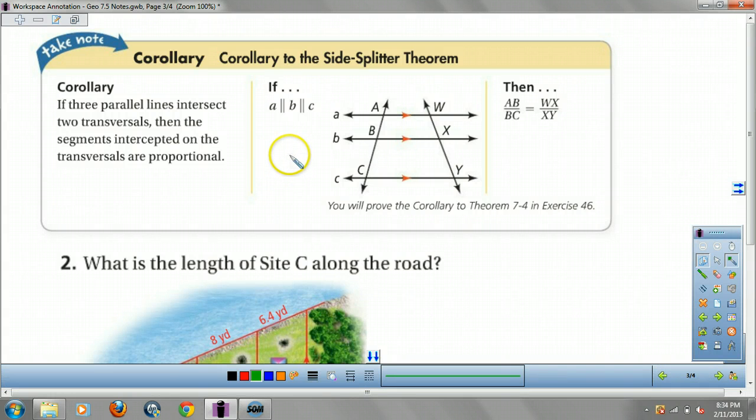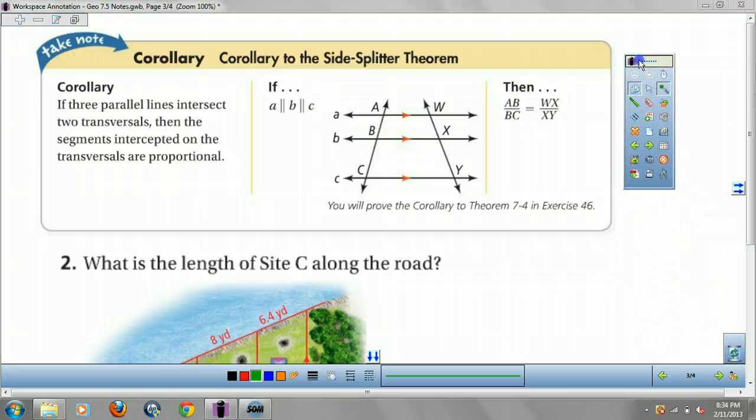Corollary to the side splitter theorem. And that is, if you have two lines, and three sets of parallel lines, if they're all parallel, then your sides are proportional. AB over BC equals DE over EF. Same thing as before, kind of. Best way to see this, guys, is just to do an example.